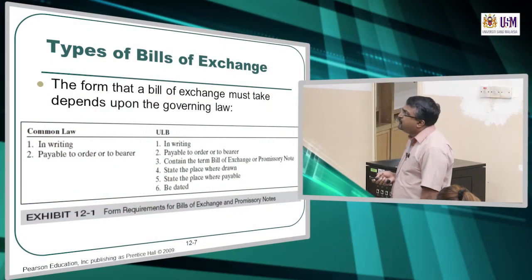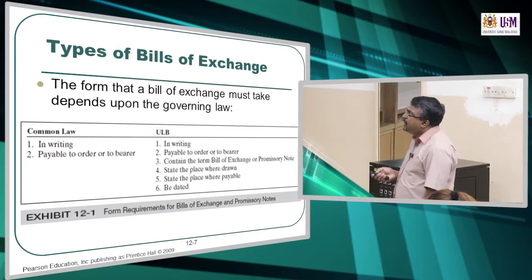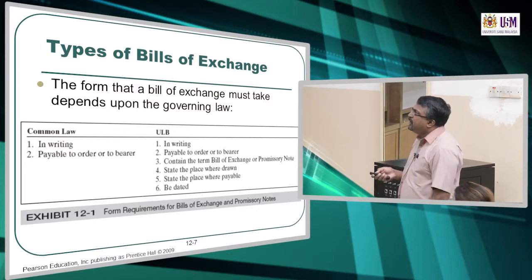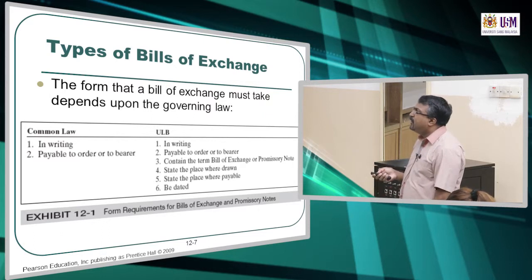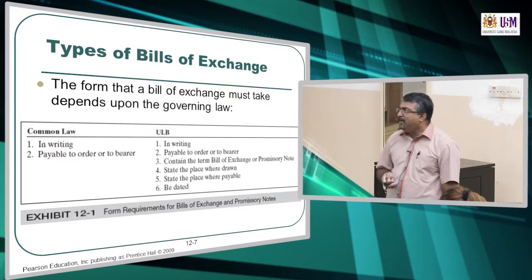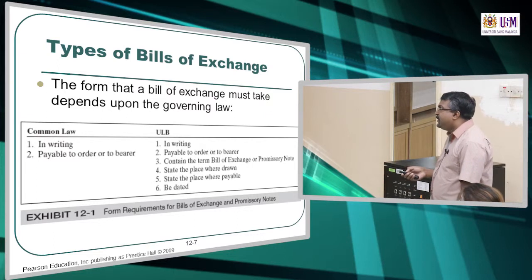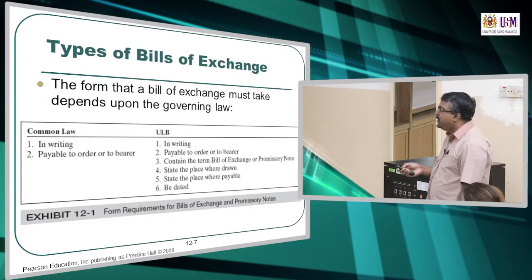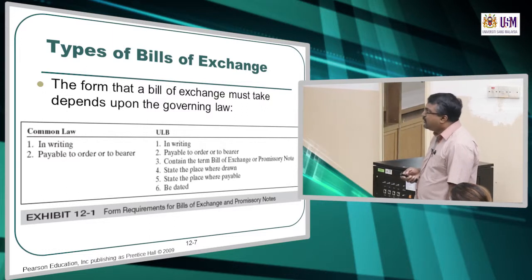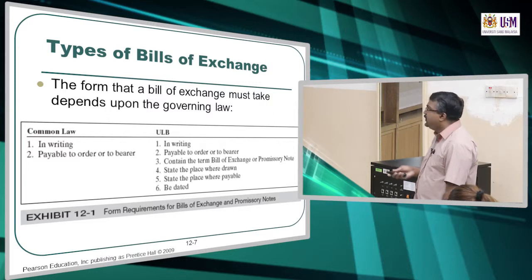There are two types of bills of exchange: ULB and common law. The form a bill of exchange must take depends upon the governing law. Malaysia uses common law. Common law has two requirements: it must be in writing, and it must be payable to order or to bearer. ULB has more conditions compared to common law — for example, the term of the bill, state of the place where drawn, state of the place where payable, and it must be dated. The state here refers to the location.